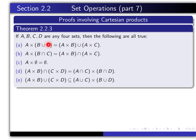In the first paragraph, you'll take a typical element of the left-hand side, and you'll use working definitions in order to show that it's also an element of the right-hand side. And in the second paragraph, you'll start over again, and you'll then take an element of the right-hand side, and using working definitions, you'll show that it's an element also of the left-hand side. Now in Part A, both sides involve two set operations: Cartesian product and union.